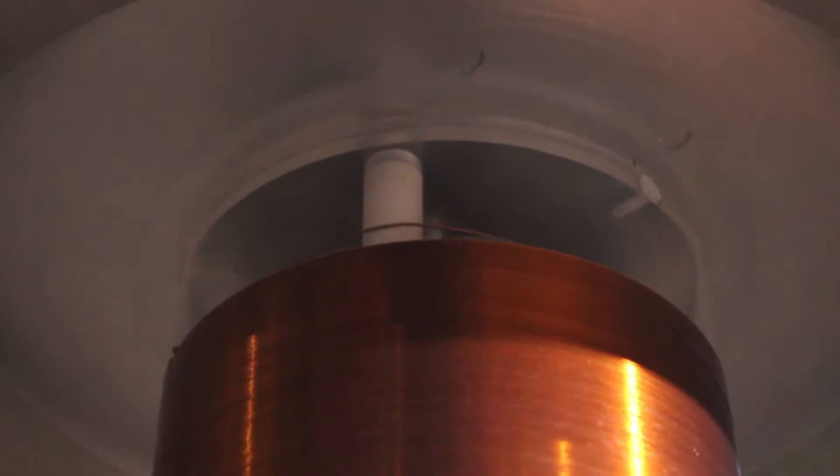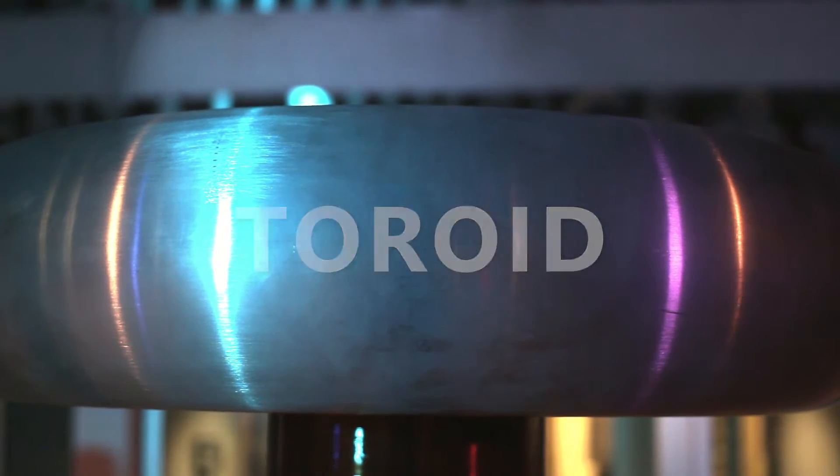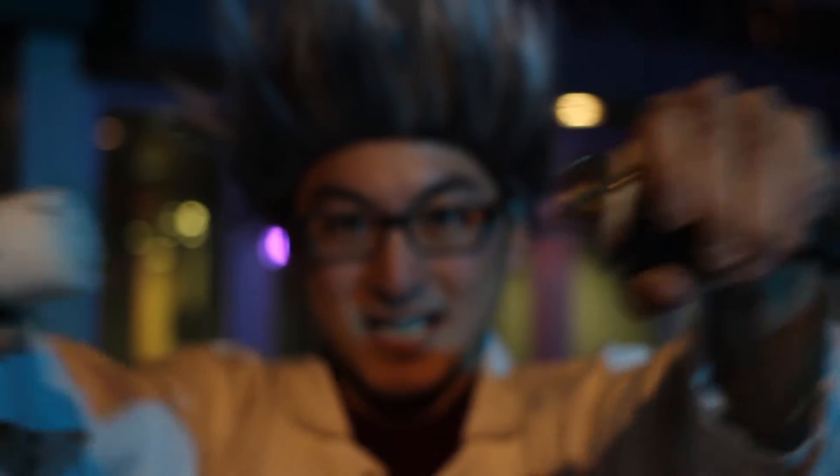This device is over 6 feet tall and the round silver part on top is called a toroid. Although this is where the action occurs, it's not the most important part of the coil.